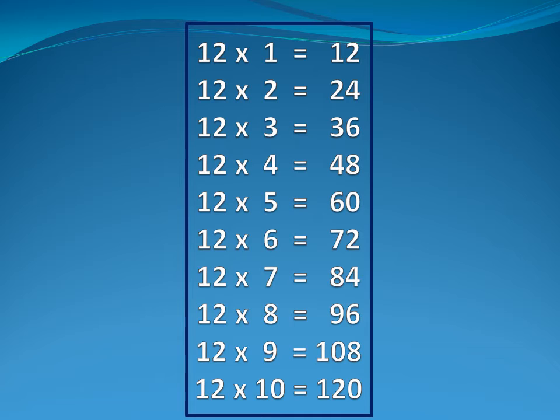Twelve five is sixty. Twelve six is seventy-two. Twelve seven is eighty-four. Twelve eight is ninety-six. Twelve nine is one hundred and eight. Twelve ten is one hundred and twenty.